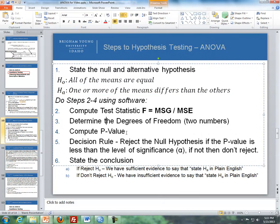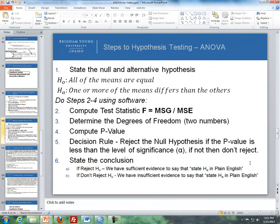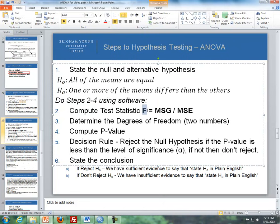Steps two through four are just like the previous independent samples, where you compute a test statistic, degrees of freedom, and P values in software. But now we'll be using the F test statistic. We get the degrees of freedom, and now we have two numbers: the numerator and the denominator degrees of freedom, and we get a P value. Then the last two steps are the same. If the P value is less than the level of significance, we reject the null. If not, we don't reject. Then we state our conclusions referring to the alternative hypothesis.